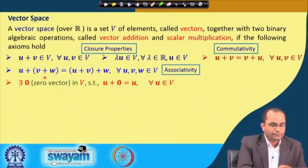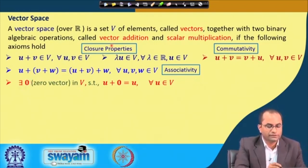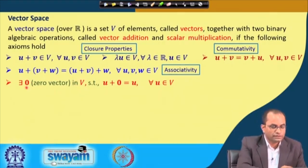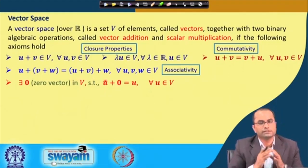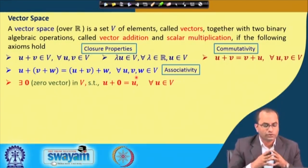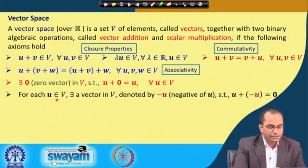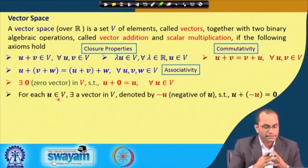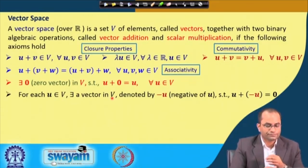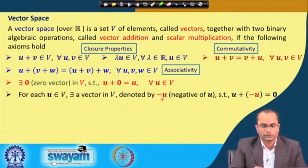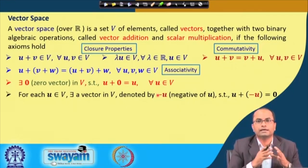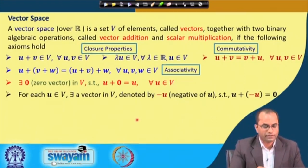There is also the existence of the zero vector. There must be a zero vector in the set V such that adding zero to any element of V leaves that element unchanged. Also, for each element U in V, there must exist a vector denoted by −U (the negative of U) such that U + (−U) equals the zero vector, which already exists in the set.